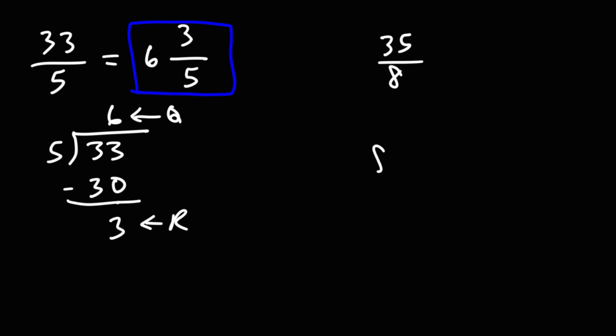For the fourth one, we're going to put the 8 on the outside, the 35 on the inside. 8 goes into 35 four times. 8 times 4 is 32. 35 minus 32 is 3.